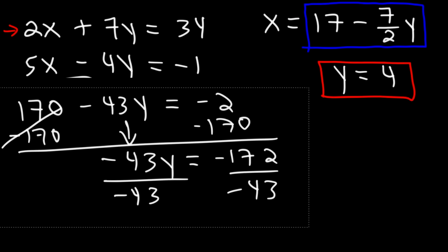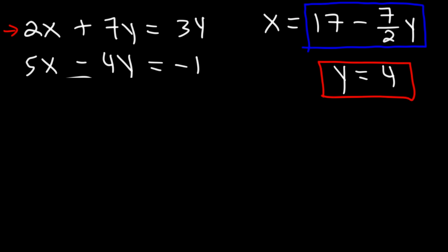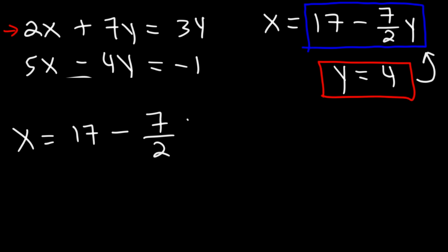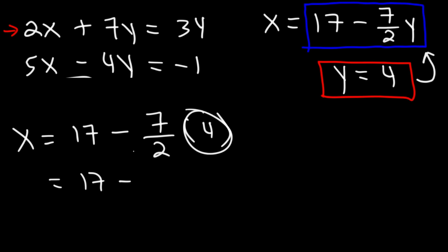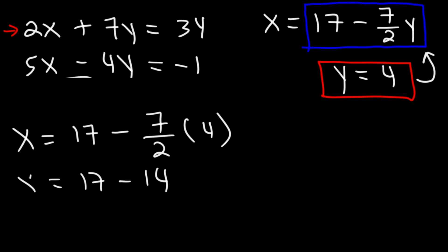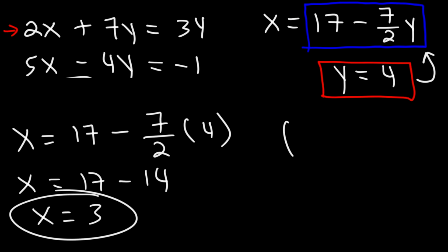Now that we have the value of y, we can calculate x by plugging into the expression x equals 17 minus 7 over 2 times y. Substituting y equals 4: 17 minus 7 over 2 times 4. 7 times 4 is 28, divided by 2 is 14. Or: 4 divided by 2 is 2, times 7 is 14. Either way, 17 minus 14 is 3, so x is 3. Our final answer as an ordered pair is 3 comma 4.